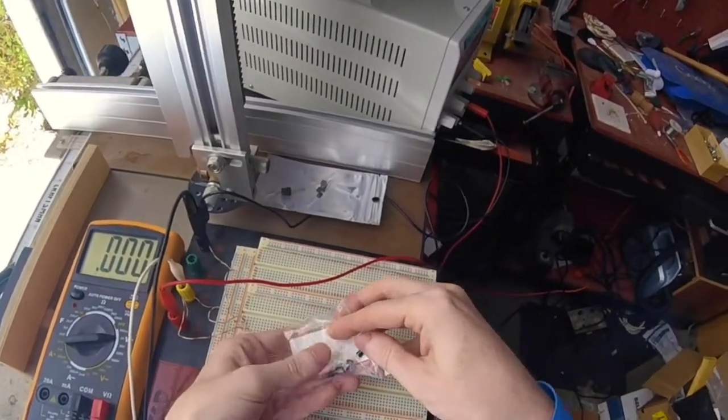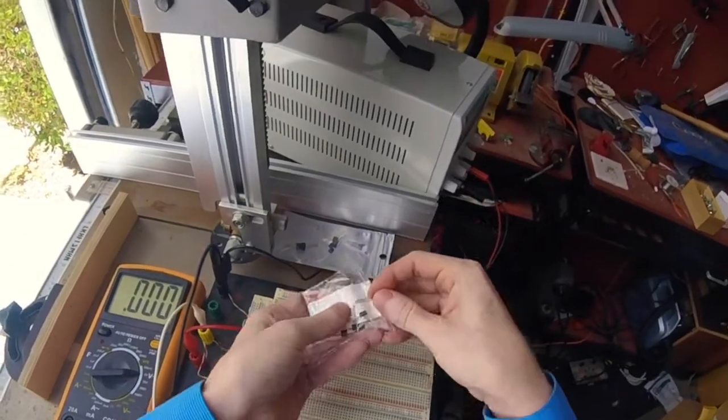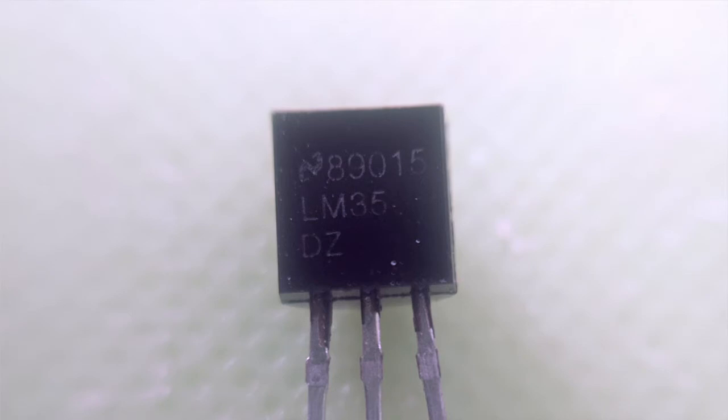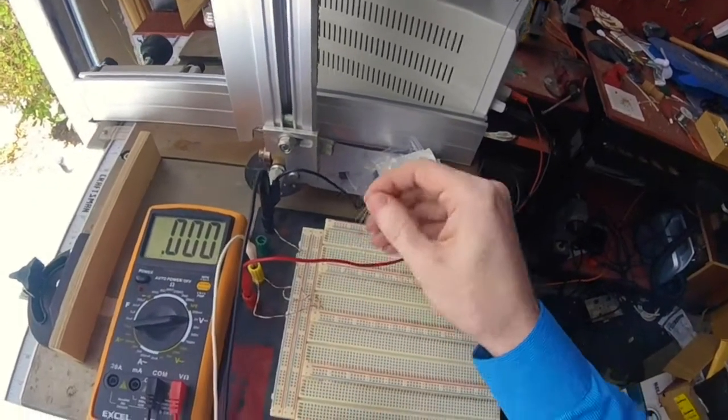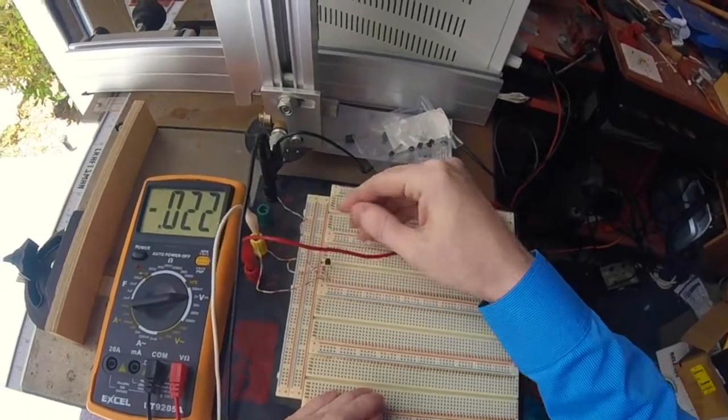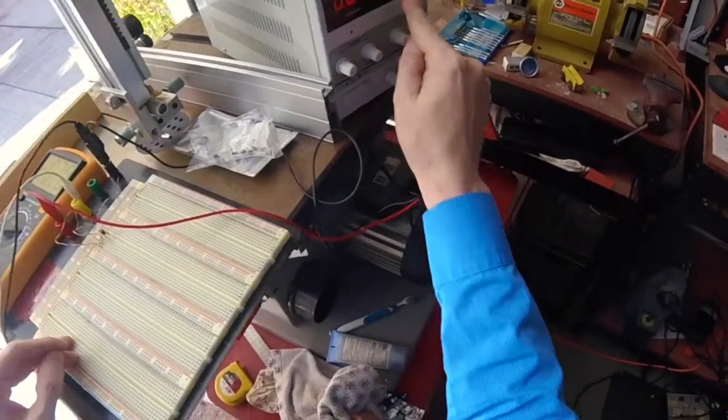Take one that's never been used before. There we go. Spread the legs. And flat side on this side. Same as before. Still got 5 volts.